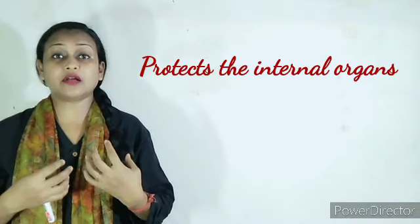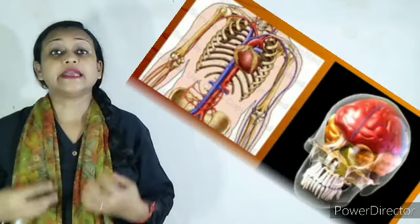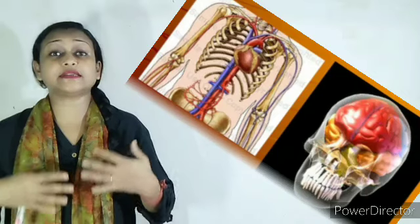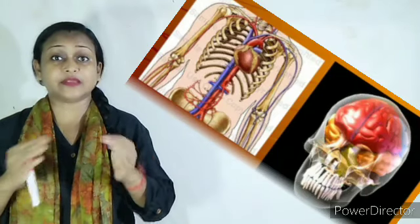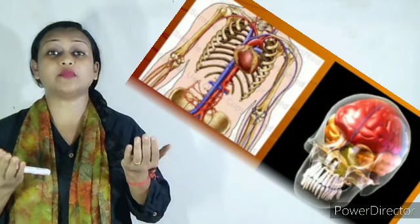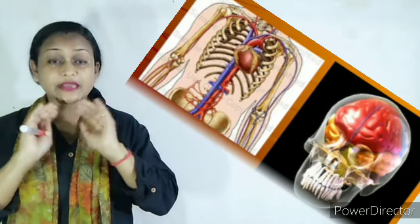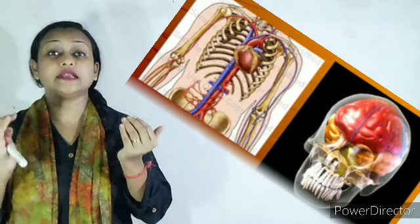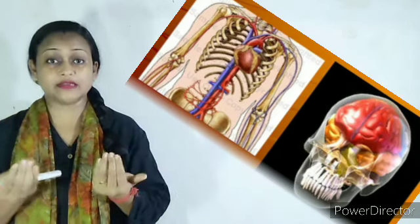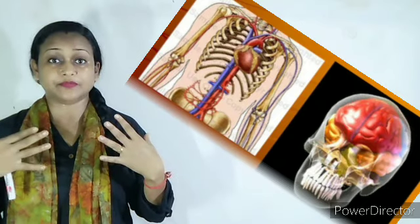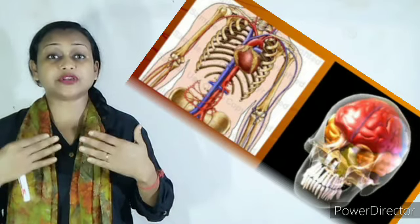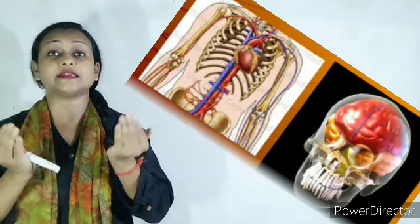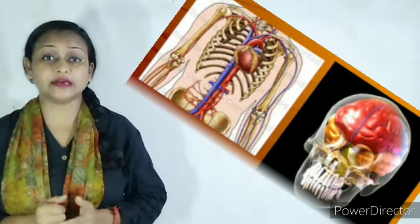The second function is that it protects the internal organs of the body. Internal organs like the lungs, heart, kidney, and stomach are protected by the skeletal system. The bones inside the body form a covering for these internal organs — for example, the rib cage on our chest covers and protects the lungs as well as the heart.